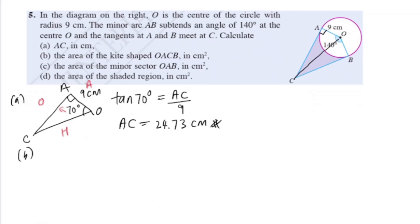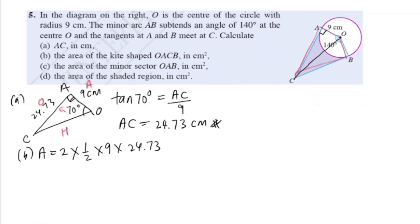For part B, find the area of the kite. The kite consists of two triangles, so we use area of the kite as 2 times area of one triangle. Area of one triangle equals half times base times height: half times 9 times 24.73. So area of kite equals 2 times that, giving 222.57 cm squared.